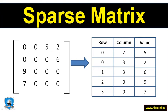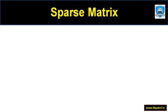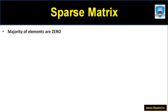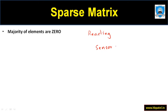Hello everyone, welcome to the course on data structure and algorithm. In this video we are going to discuss sparse matrix. First, let us try to understand where sparse matrix is used. The majority of elements of a sparse matrix are zero. For example, if we are reading input from a sensor, every second we are reading inputs, but most of the time the sensor does not detect anything and it returns zero. The moment the sensor detects something, it returns one or something else.